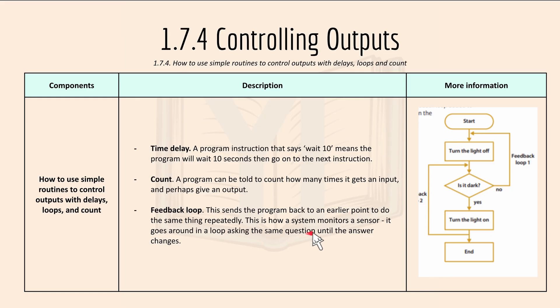This is how a system monitors a sensor. It goes around in the loop asking the same question until the answer changes. Like the example just now, from start to turn the light off. And is it dark? If it's not dark then it has a feedback loop over here. And this is another feedback loop over here.